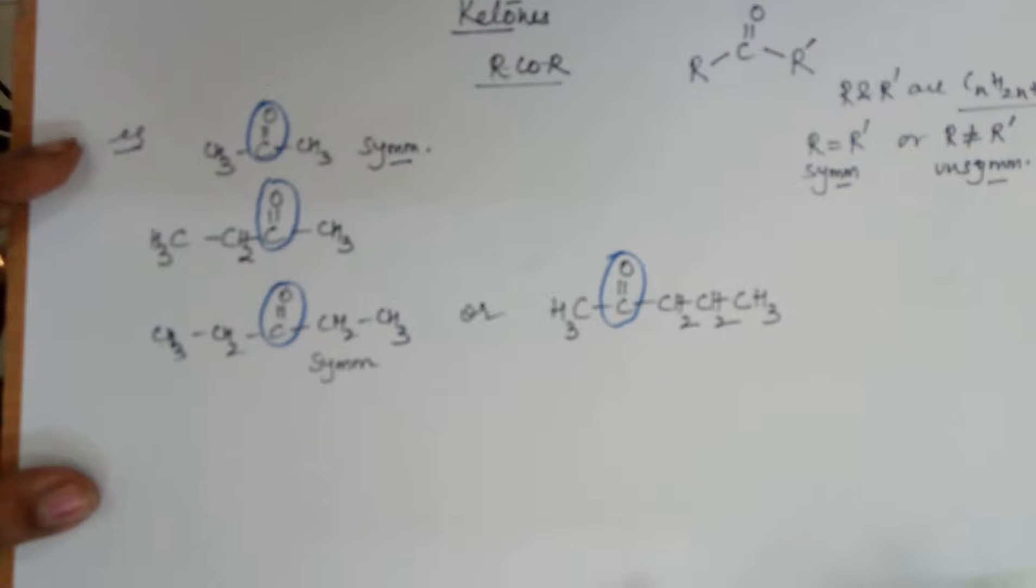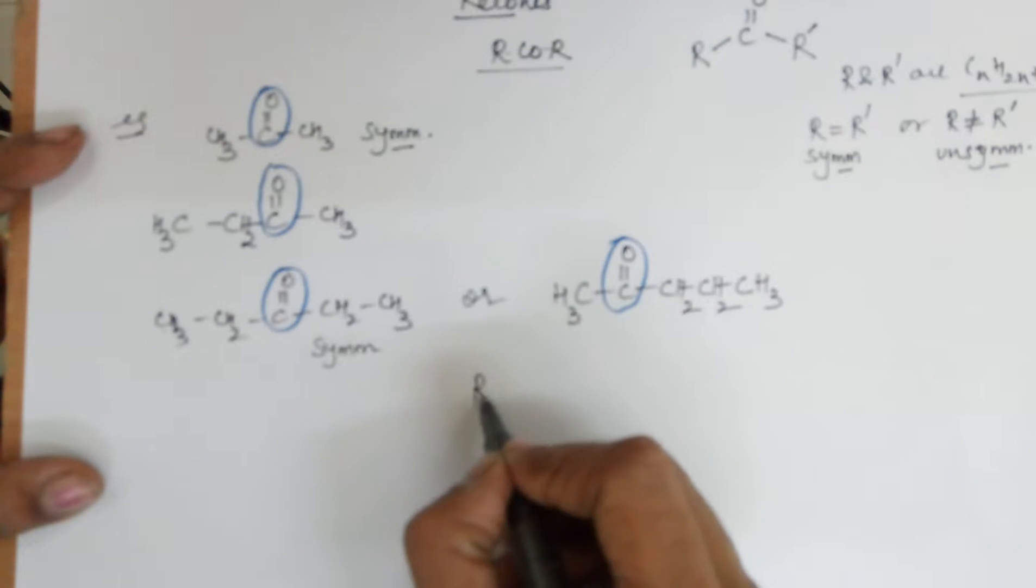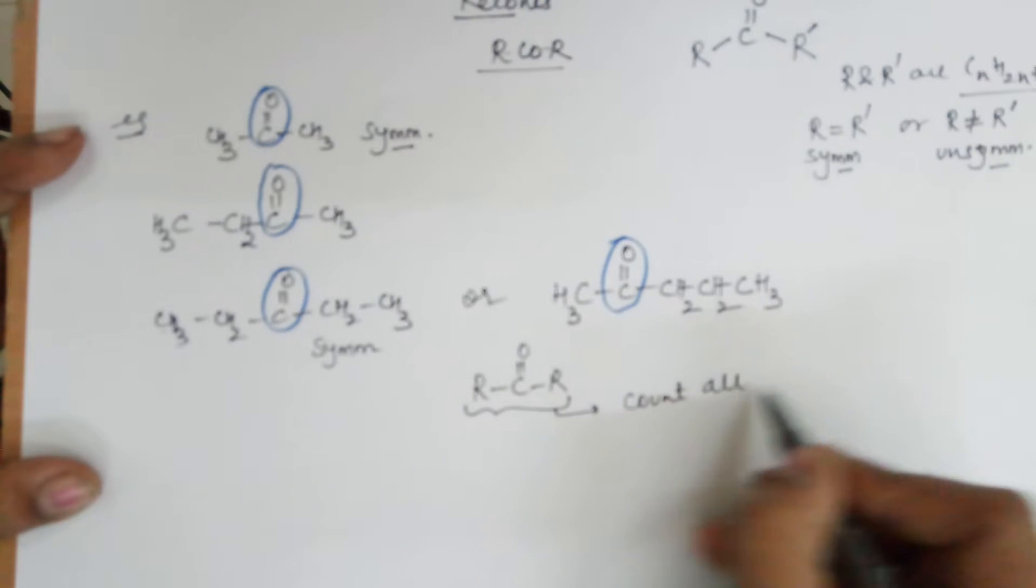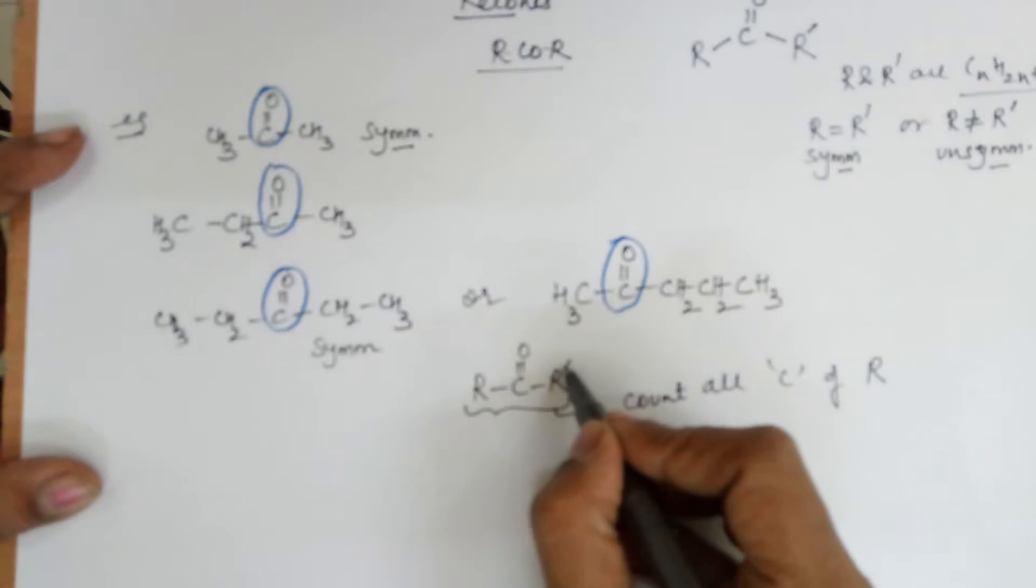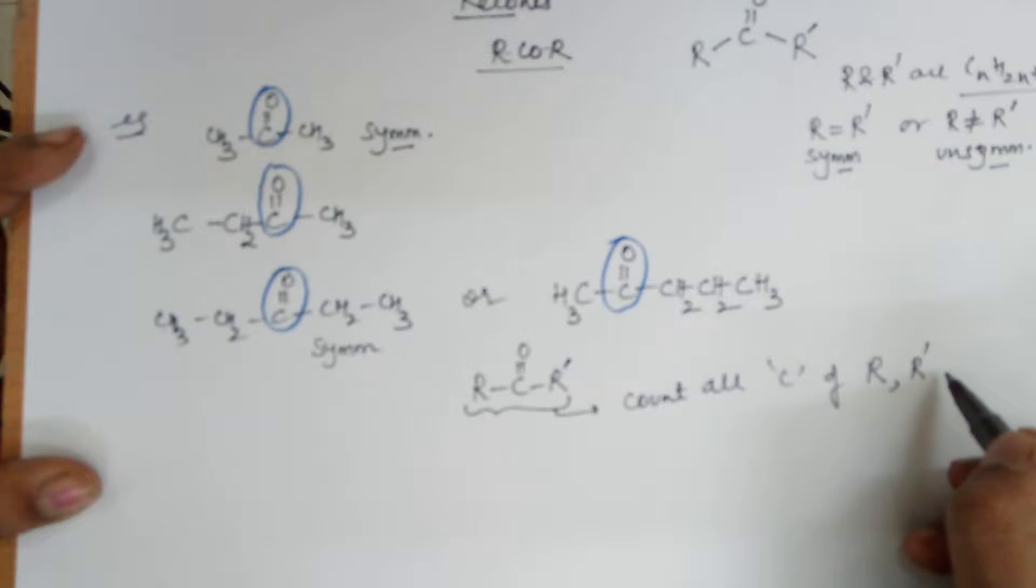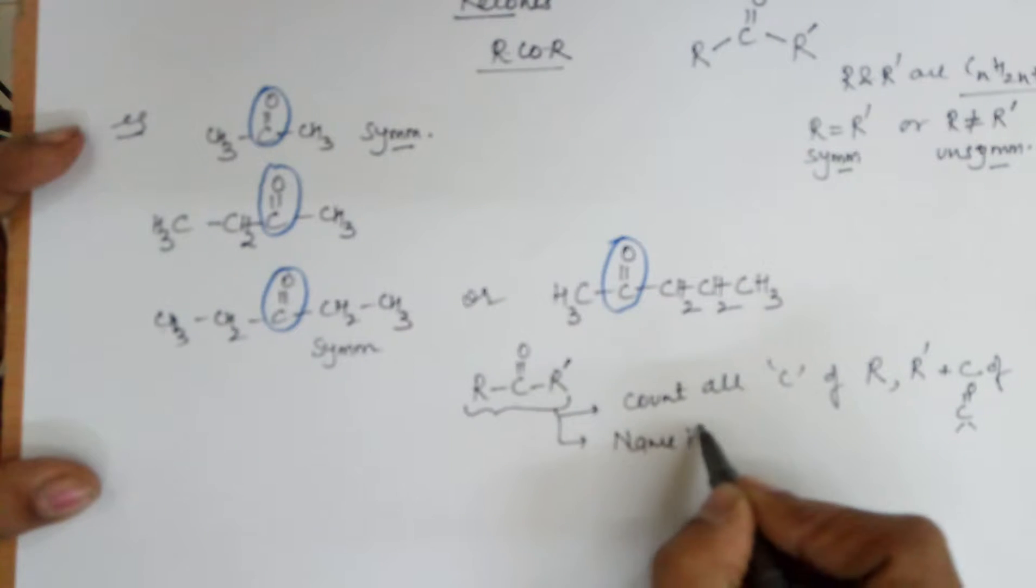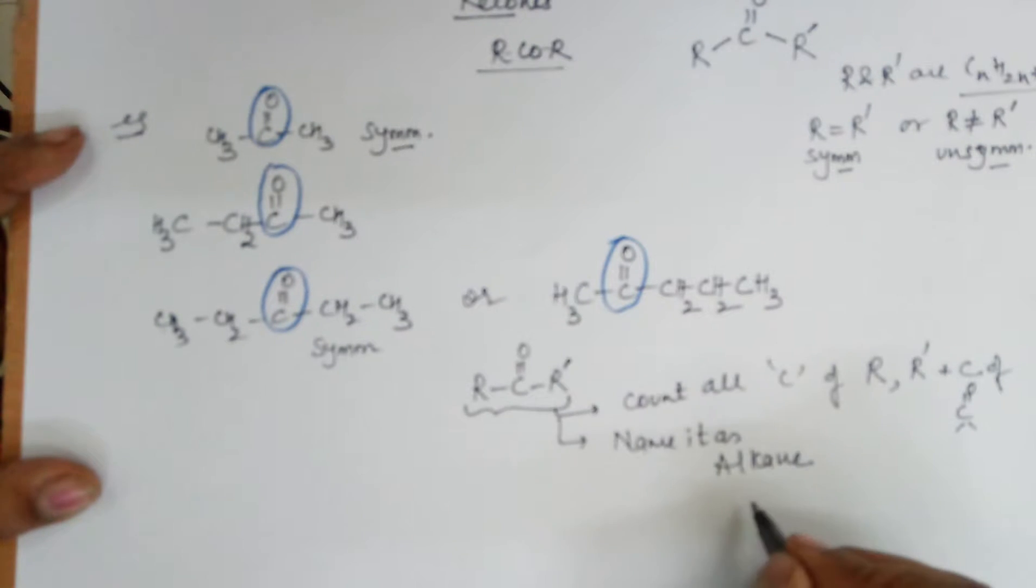Moving ahead with the IUPAC nomenclature. Now for the IUPAC nomenclature, you need to count all carbons of R, R' plus the C of the ketone. After doing that, you need to name it as alkane. After doing that, remove the E at the end and you need to add O-N-E. Hence, the name of the compound becomes Alcan-one.